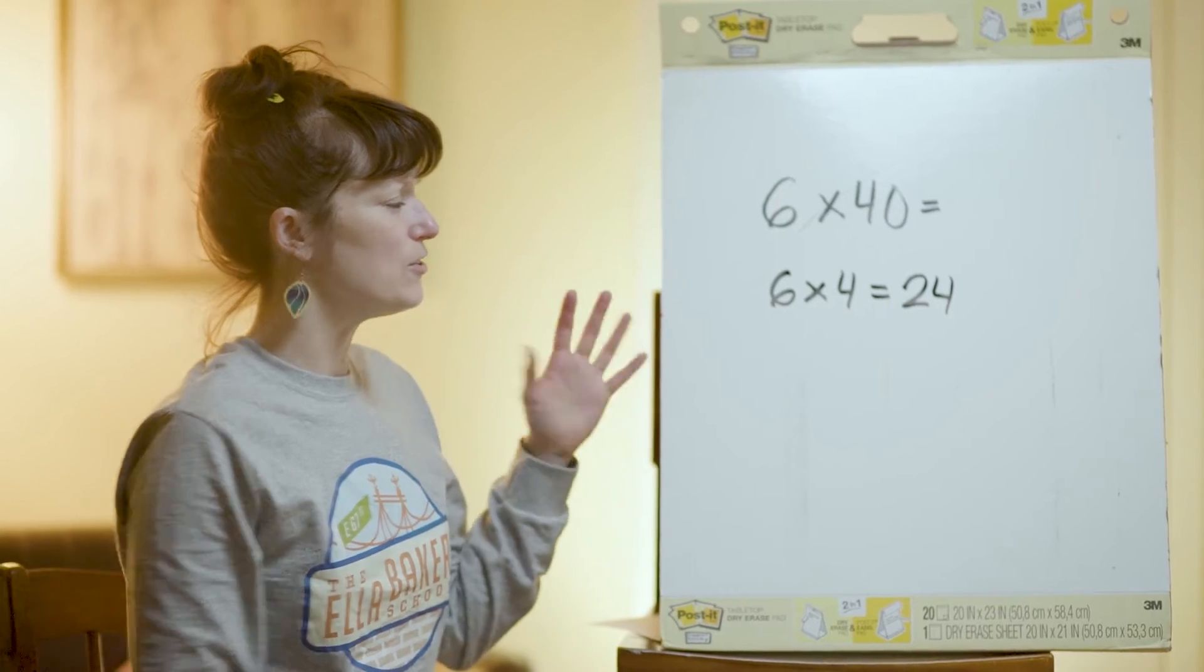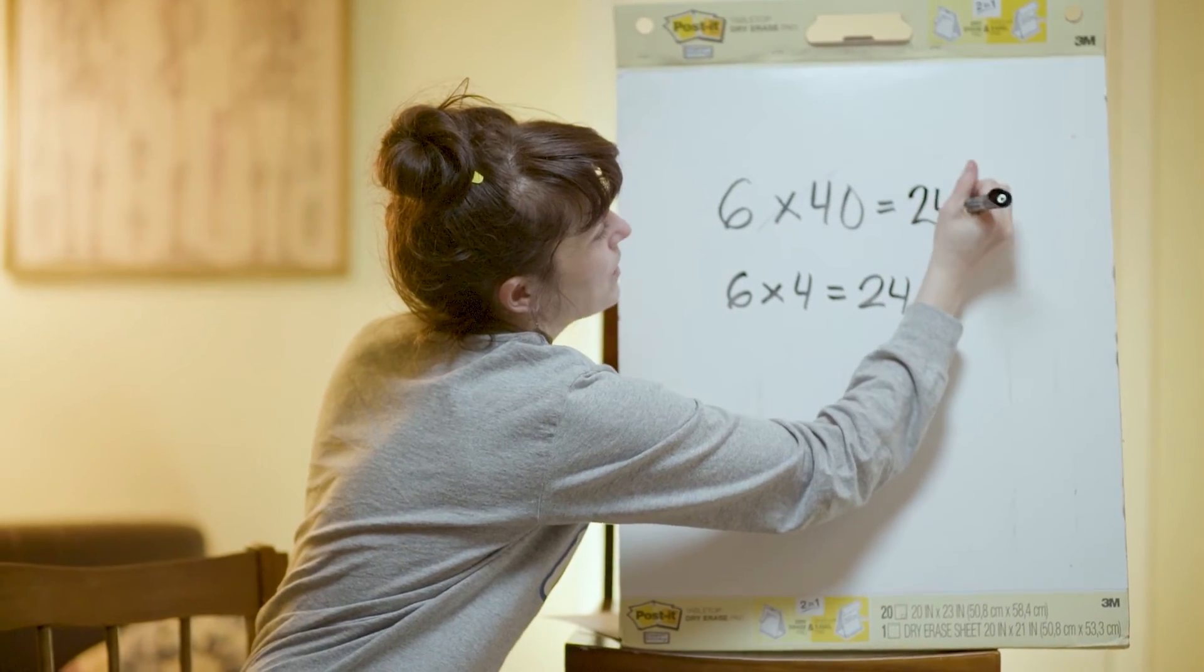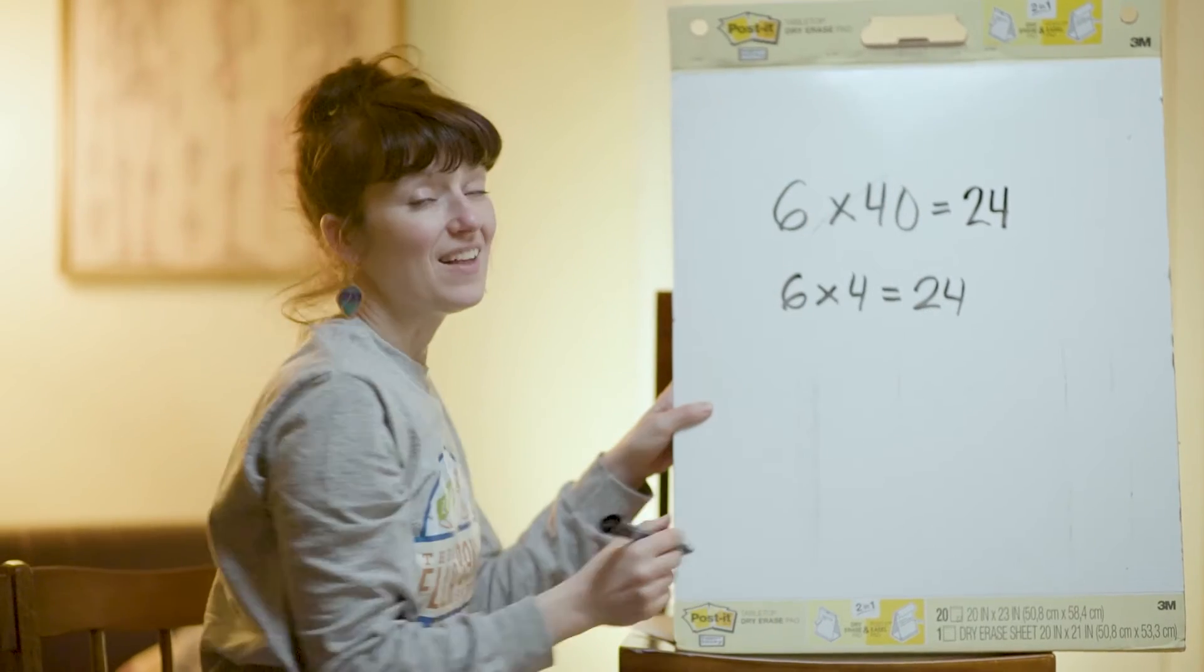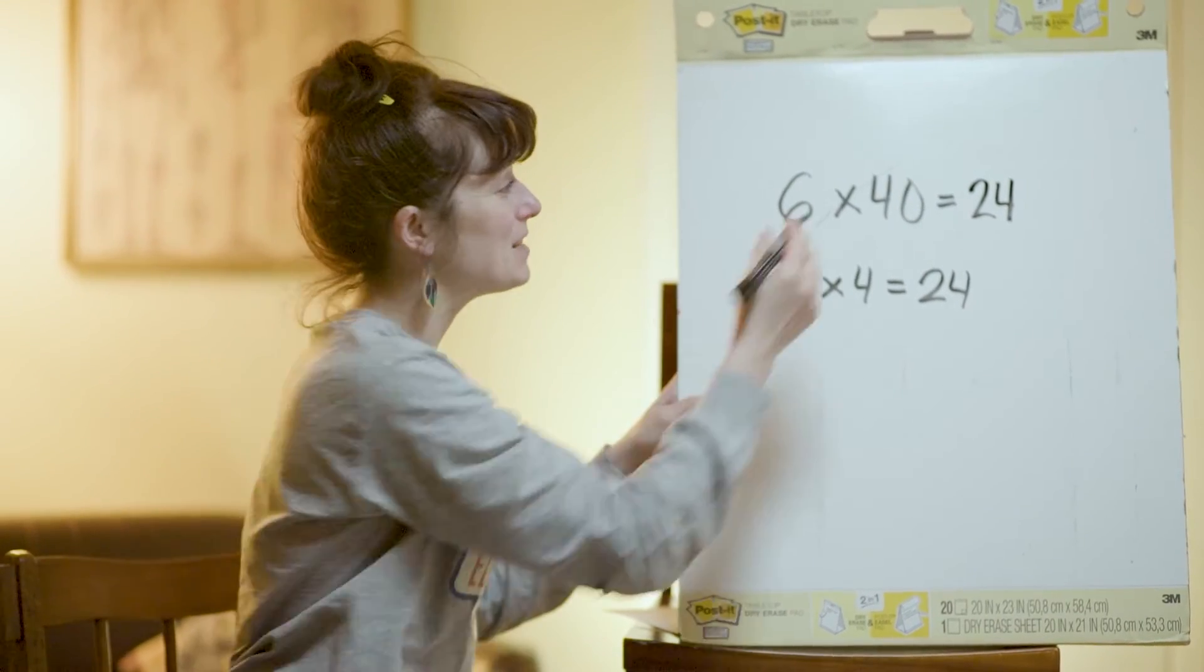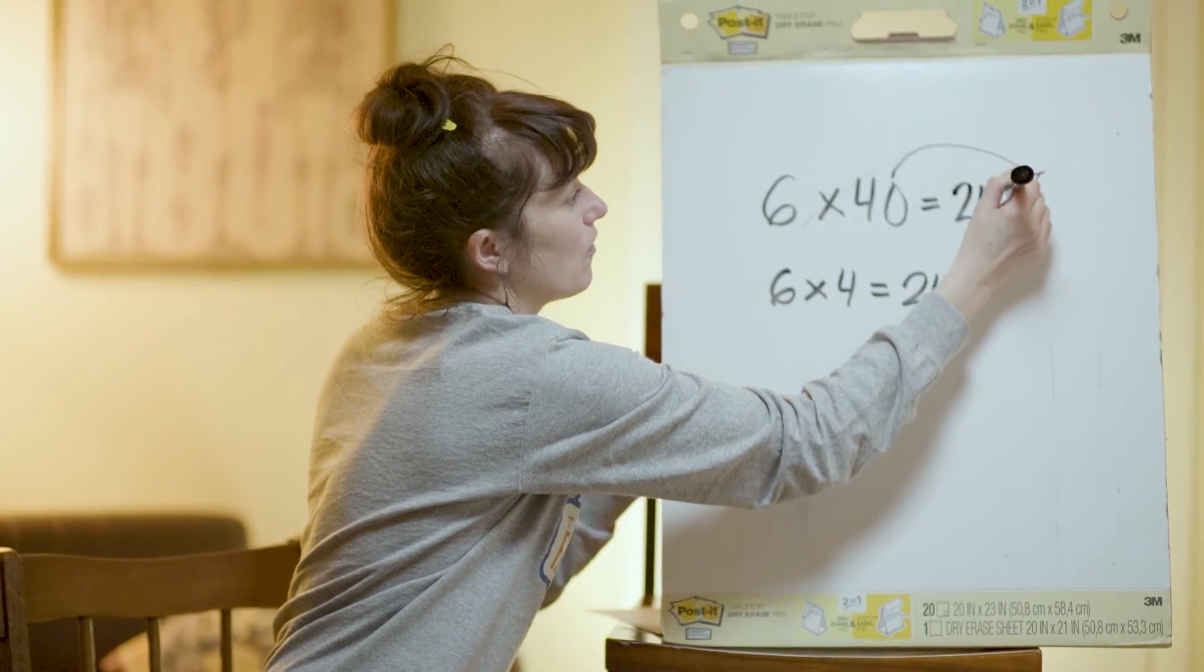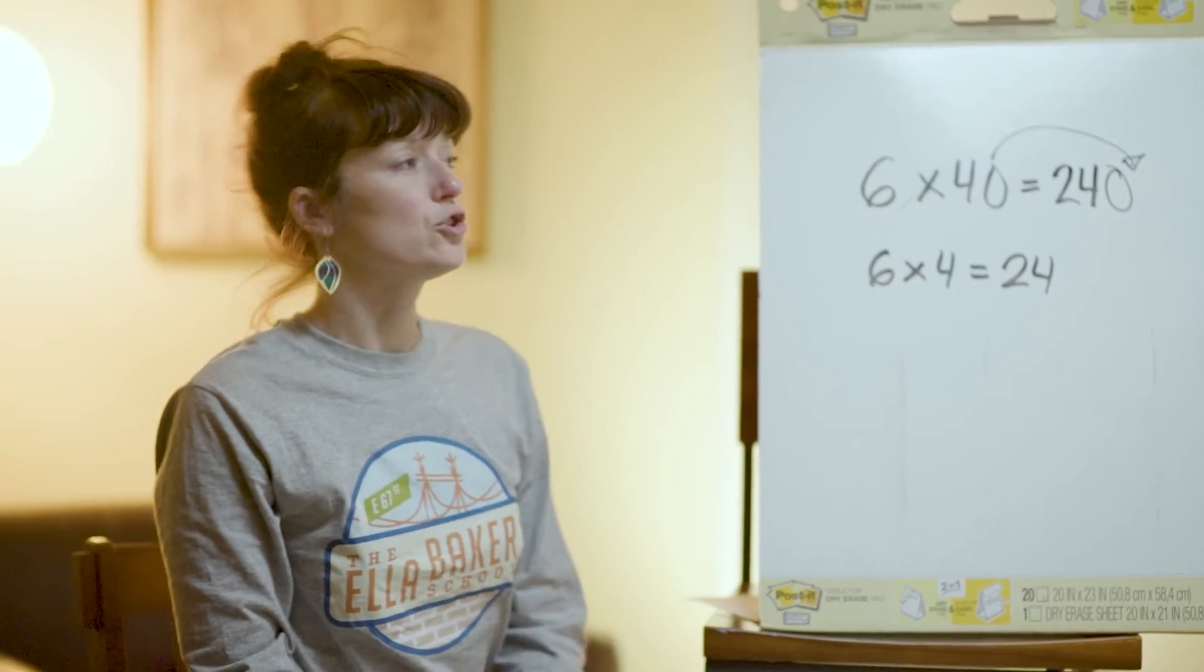So I can use this here. I can bring this 24 up here, and then I can just move my 0 over. And then I get 240.